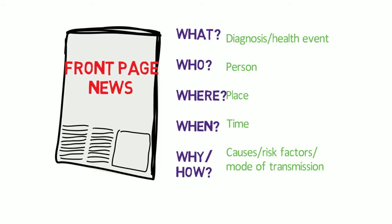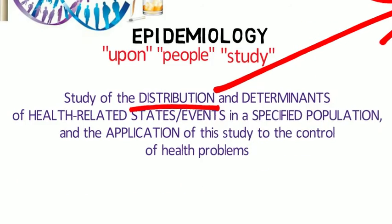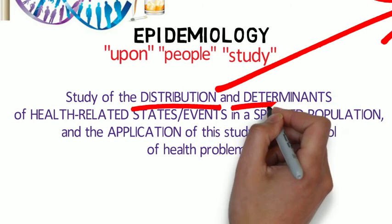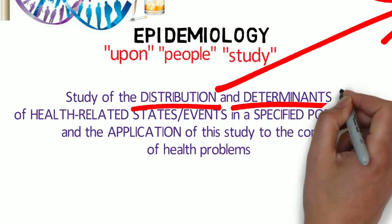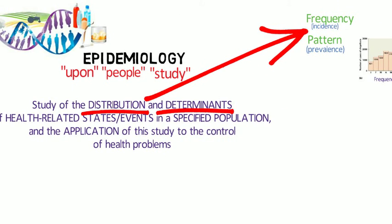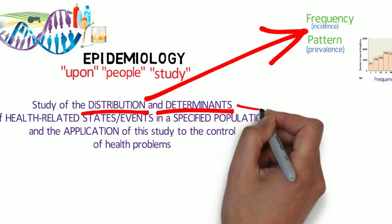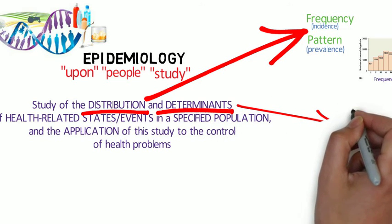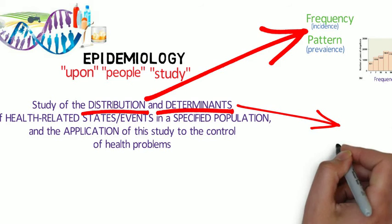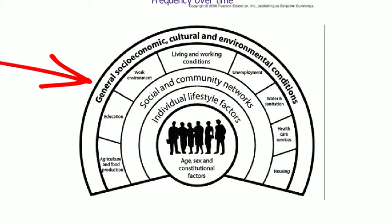Epidemiology is also used to search for determinants, which are the causes and other factors that influence the occurrence of disease and other health-related events. Epidemiologists assume that illness doesn't occur randomly in a population, but happens only when the right accumulation of risk factors or determinants exists in an individual.